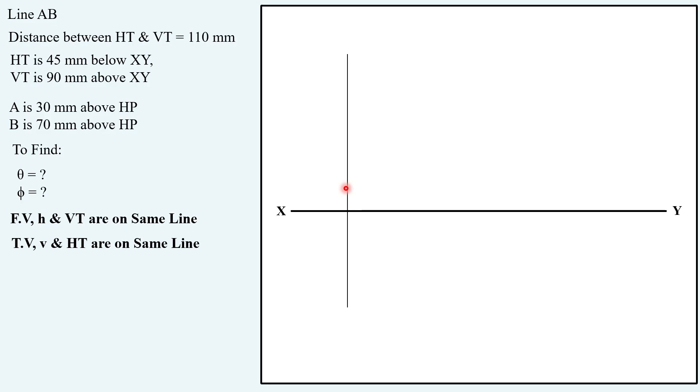This is the given data starting with XY line, taking a vertical projector. You have to make sure the first vertical projector you have drawn would be the projector of HT in order to avoid complications and get the solution in an easiest manner.